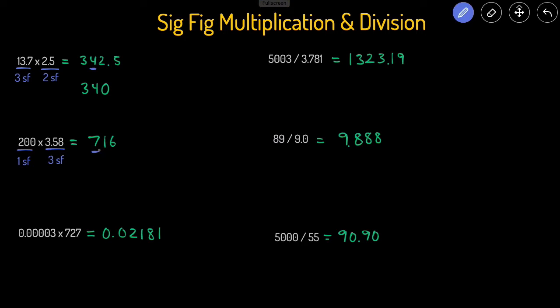We're going to underline the first sig fig, which is seven. Take a look at the number next to it, that's a one, so we are not going to round the seven up. So this is just going to stay at seven.